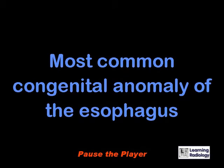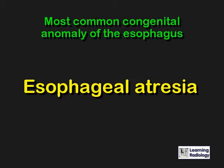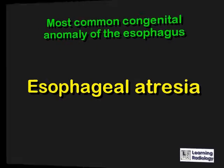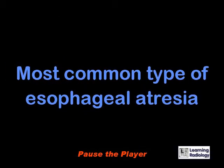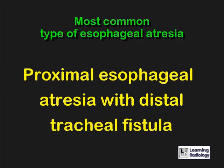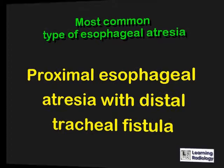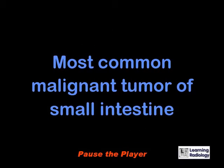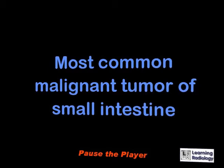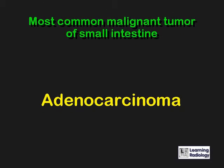What is the most common congenital anomaly of the esophagus? Esophageal atresia. What is the most common type of esophageal atresia? Proximal esophageal atresia with distal tracheal fistula. What is the most common malignant tumor of the small intestine? Adenocarcinoma.